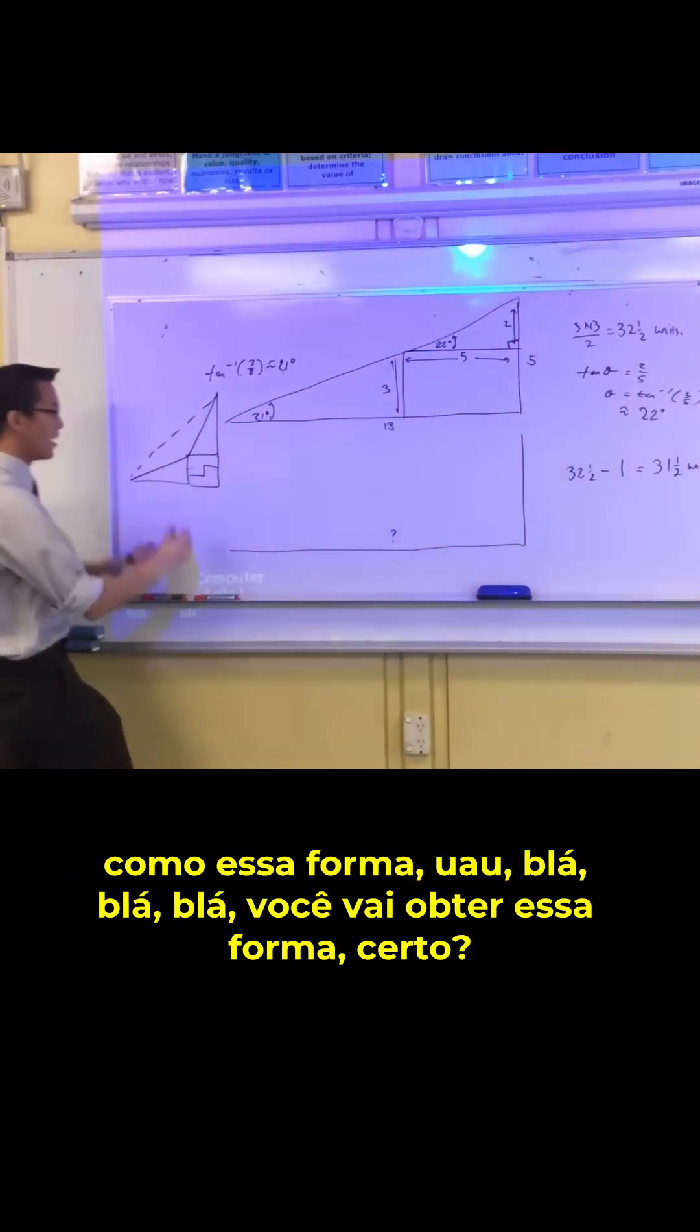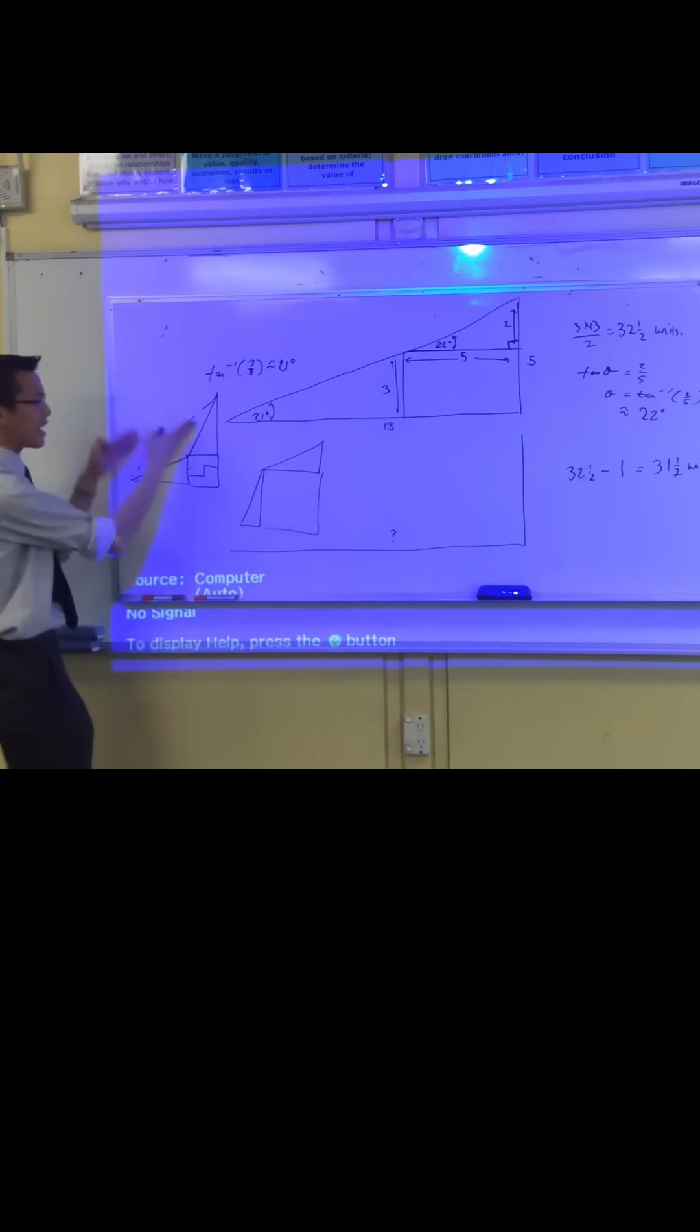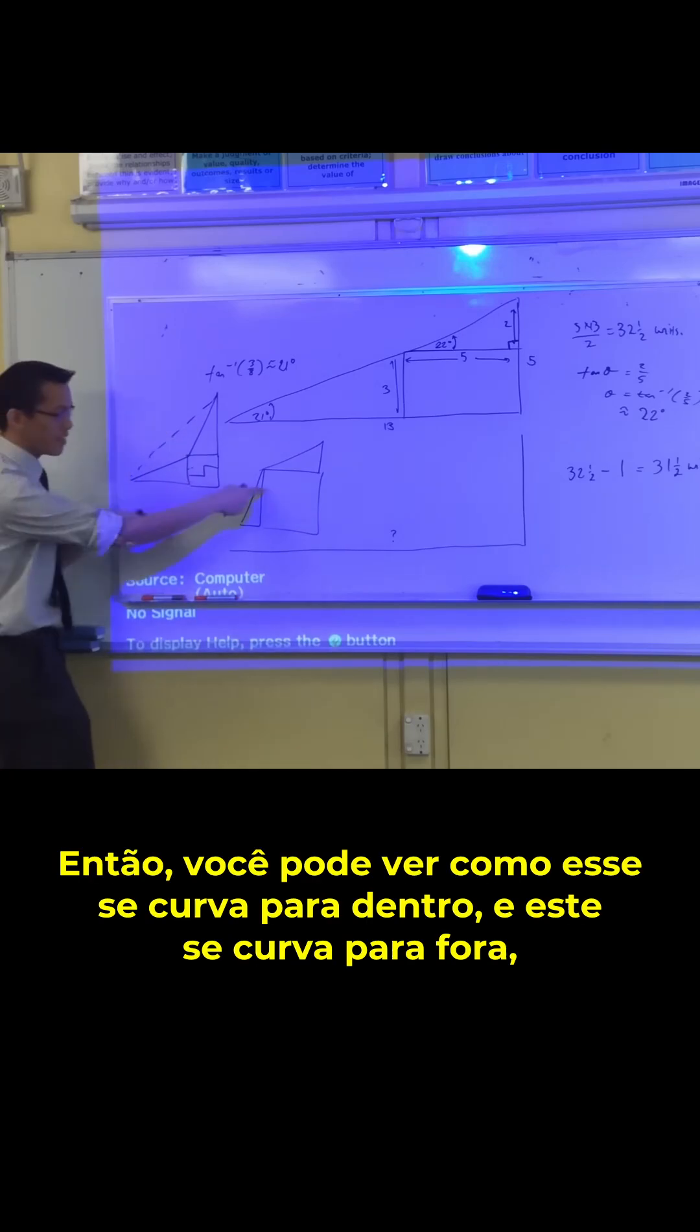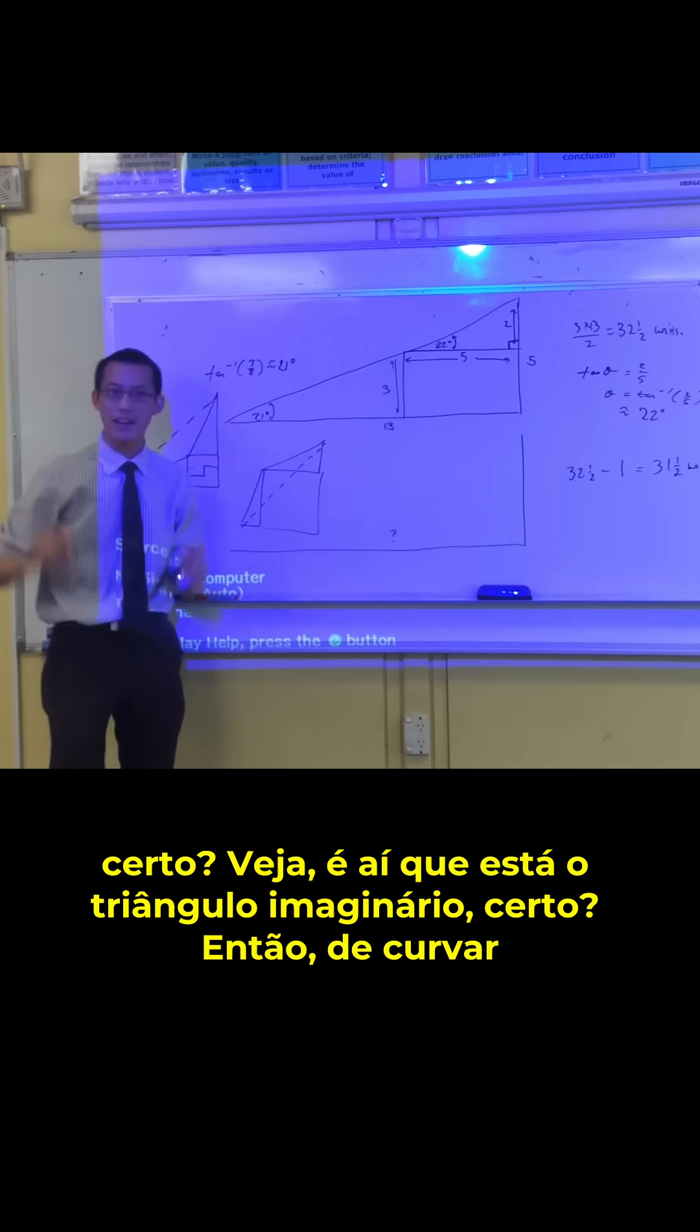You're going to get this shape. So you can see how this one bends inwards, and this one bends outwards, right? See, there's where the imaginary triangle is, okay?